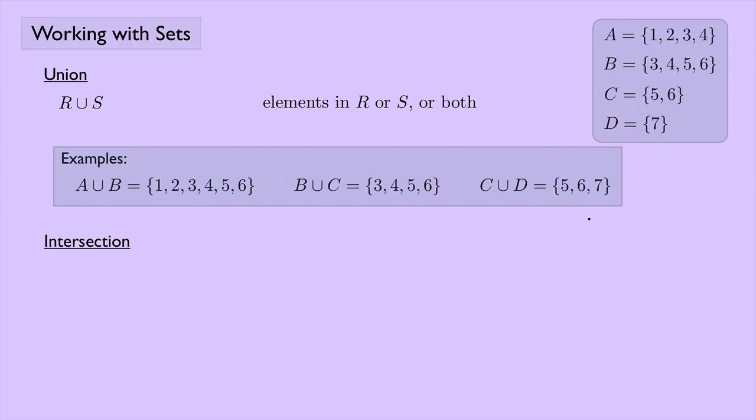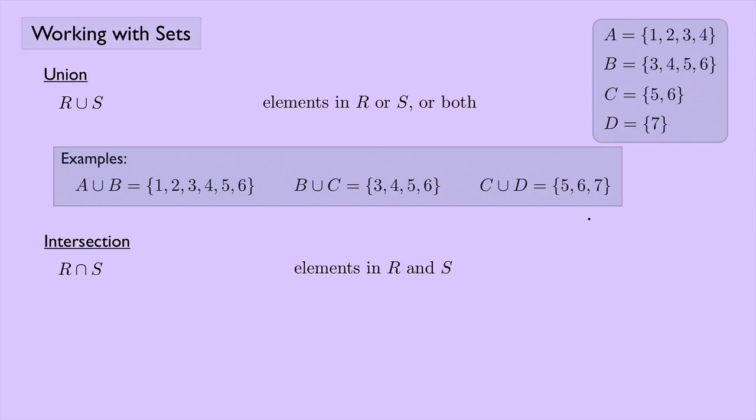What about the intersection? R intersect S consists of elements that are in R and S. Here's some examples. If we have A intersect B, that's just three and four because A and B only have the elements three and four in common. B intersect C is five and six. B and C only have the elements five and six in common.